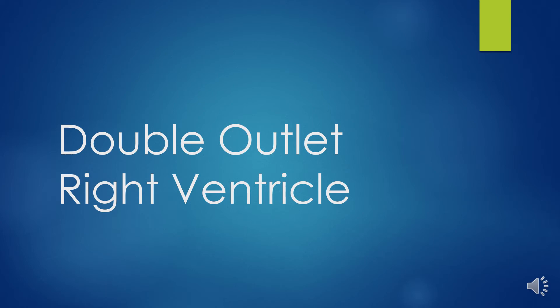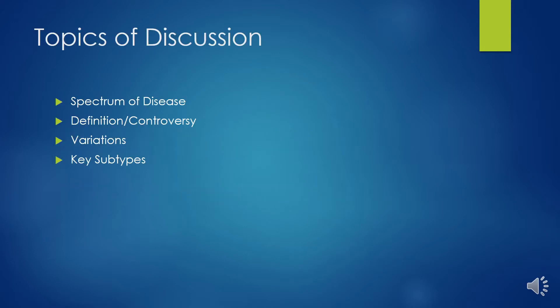Double outlet right ventricle is a heterogeneous group of cardiac malformations characterized by complete origin of the PA and more than or equal to 50% origin of the aorta, or the PA in DORV with transposition, from the morphologic right ventricle.